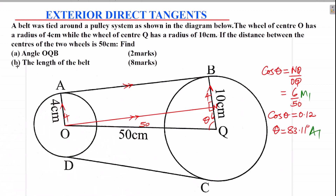So that is how we calculate angle OQB — you get two marks, a method mark and an answer mark. That is the first part. Second part: the length of the belt, which is 8 marks. This one involves a little bit more working. The length of the belt means the distance around the perimeter of this figure — the belt will cover the two wheels. So we are going to start by getting distance AB, getting the whole distance around.